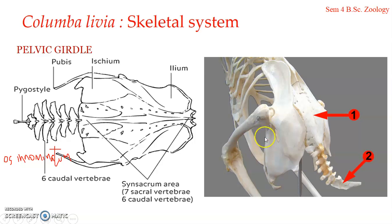The pubic bone is a long, thin, curved, slender bone directed backward, parallel to the ventral margin of the ischium, with which it is usually fused. It forms the ventral part of the acetabulum. Behind the acetabulum, the pubes and ischium are separated by an oval opening known as the obturator foramen.